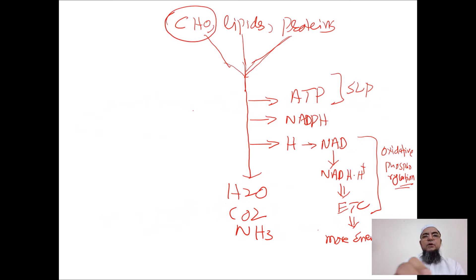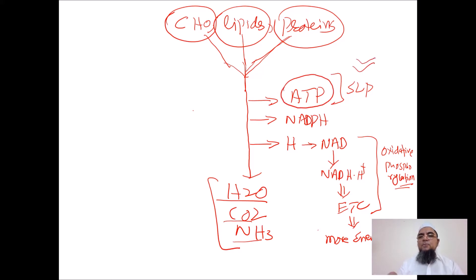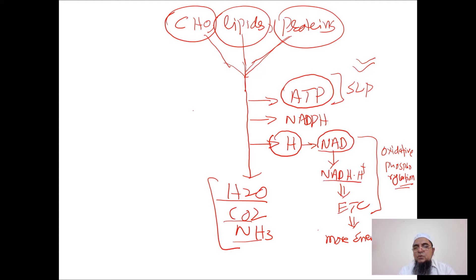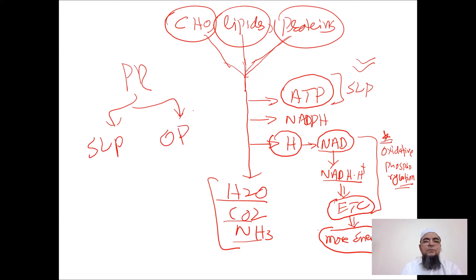Carbohydrates, lipids, and proteins are broken down in the catabolic process into smaller molecules — water, carbon dioxide, and ammonia — and release energy directly in the form of ATP. This mechanism is called substrate level phosphorylation. Alternatively, they release hydrogen, which is accepted by hydrogen acceptors. These reduced equivalents enter the mitochondria, enter the electron transport chain, and give us more energy. This system is called oxidative phosphorylation.